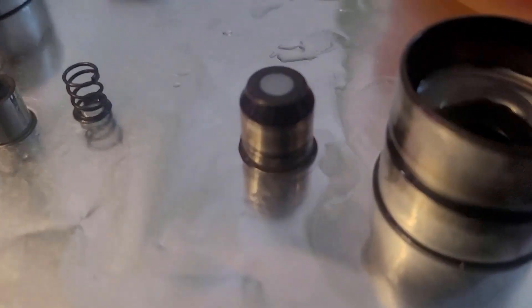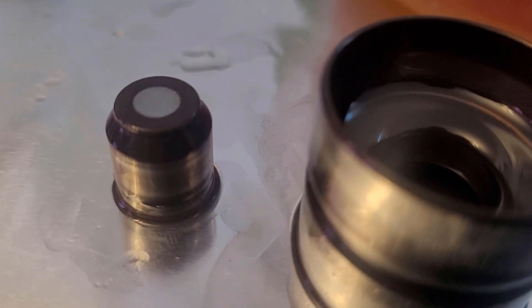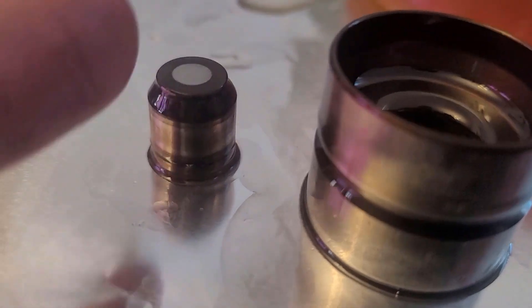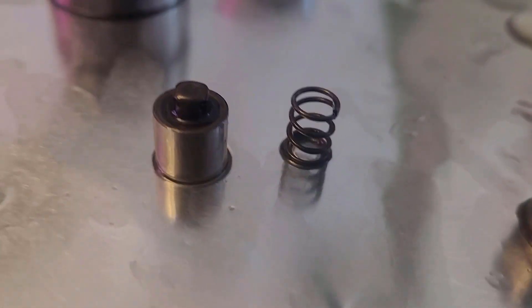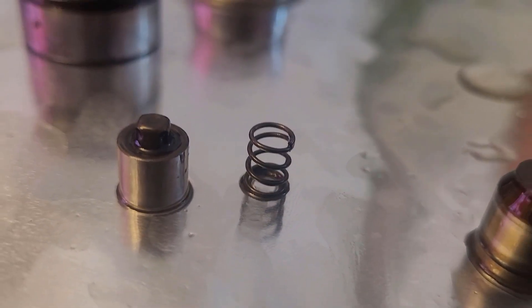Once you have this piece, it'll come apart into these components: this piece that looks sort of like a stubby bullet with a sloped top, your spring, and then this small cylinder with a little nipple on the end.